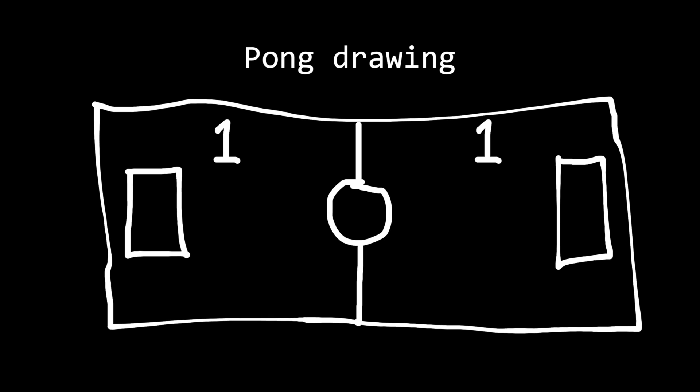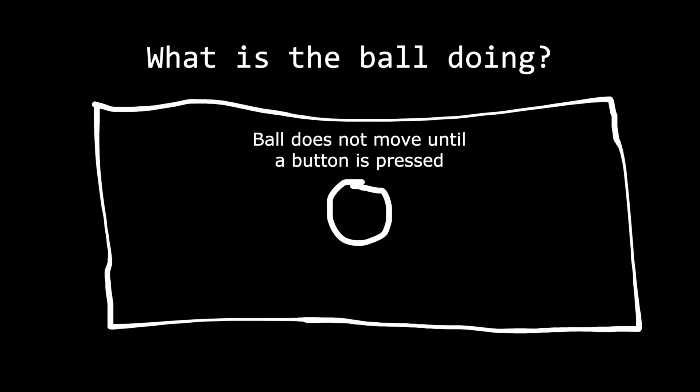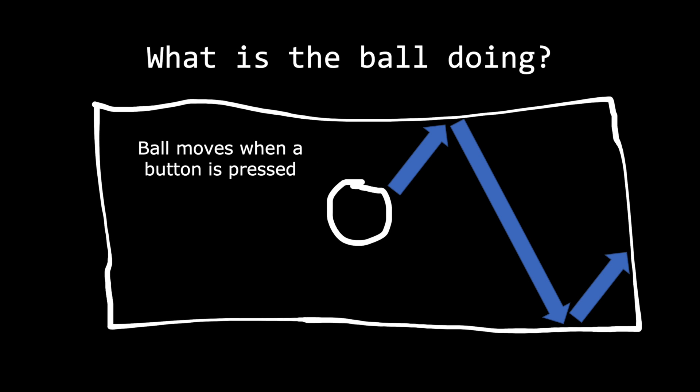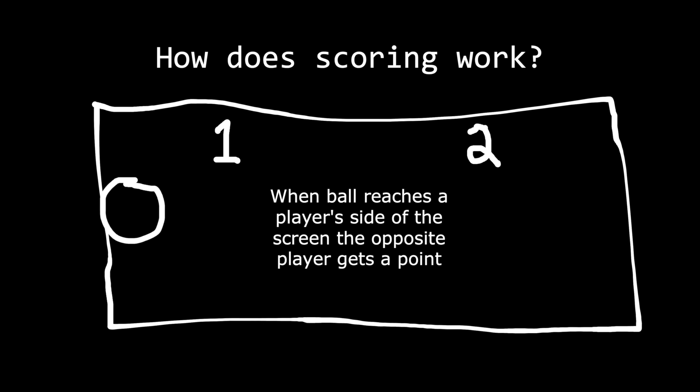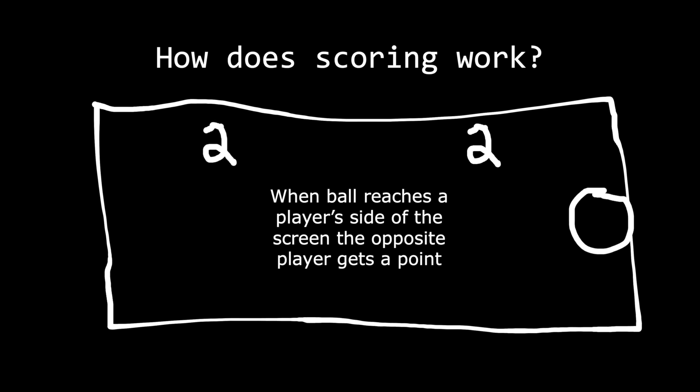I like to go a little further and draw out what things are doing. For example: what is the ball doing? The ball does not move until a button is pressed. What happens when a button is pressed? The ball moves. The ball bounces as it hits the horizontal lines of our screen and stops when it hits a vertical line. For scoring: when the ball hits a vertical side of the screen, it gives a point to the player on the opposite side, and vice versa.